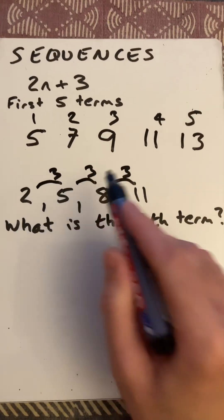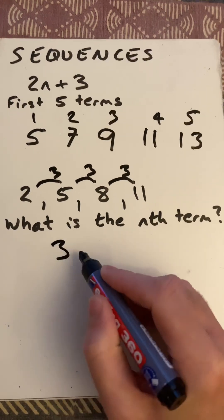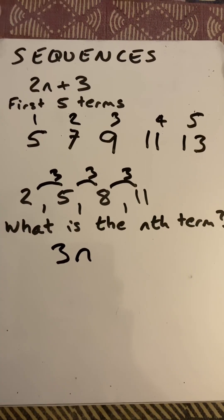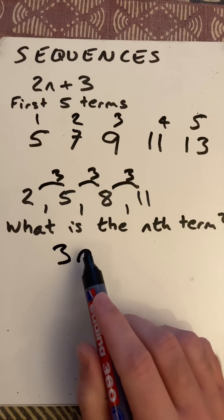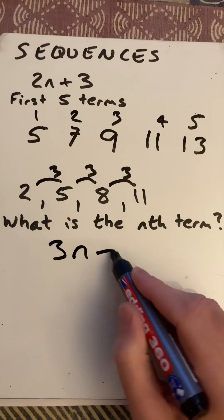So I'm going to have multiples of 3. So I'll put 3n to start. But then I notice that that first term is not 3. So how do I go from 3 down to 2? Well, I subtract 1.